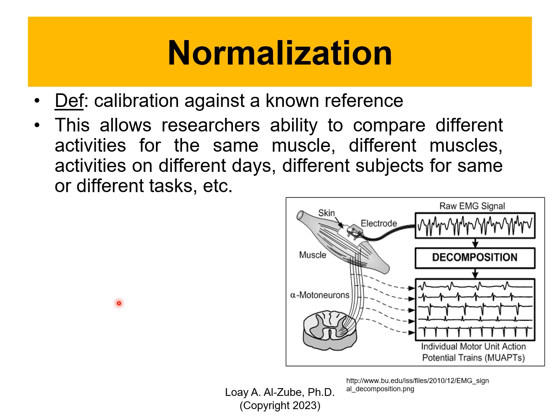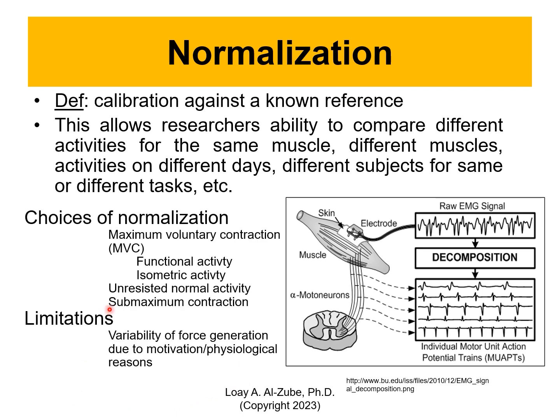Normalization allows us to compare different activities of the same muscle, different muscle activation, different days, different subjects, same or different tasks. The way you do this is with a maximum voluntary contraction — you do a maximum contraction of that muscle voluntarily, and that's your reference; then you normalize to that. You can normalize to functional activity, isometric activity, unresisted normal activity, or sub-maximum contraction. There are limitations and variability of force generation due to motivation and physiological reasons, but normalization is an important thing to do when testing.